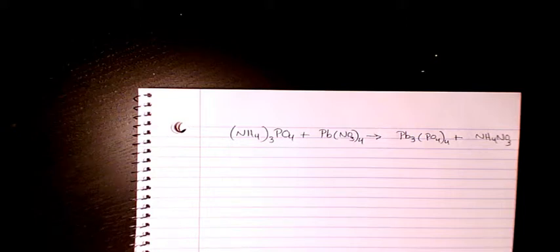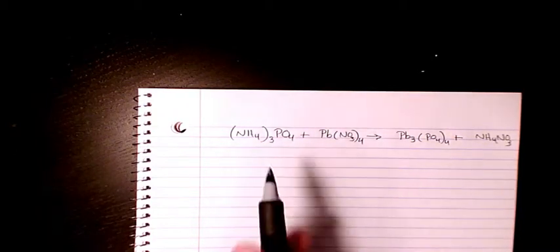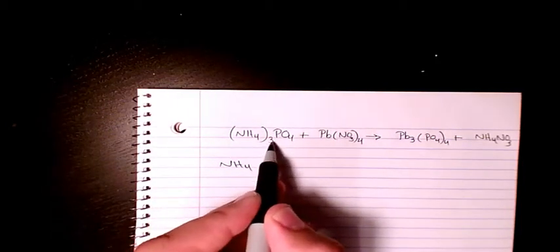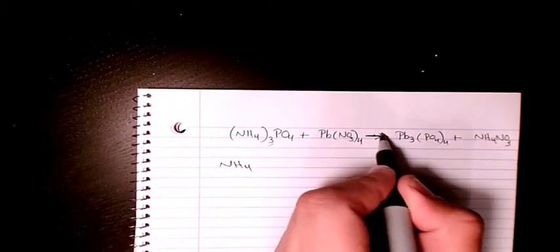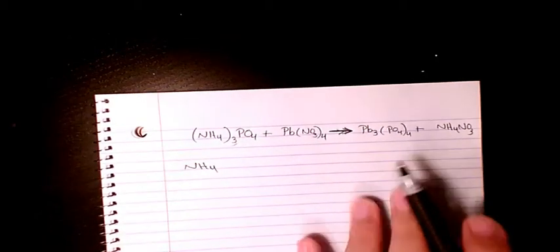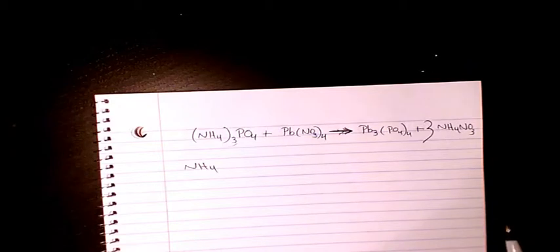What's up guys, welcome to my channel. This is Massey and here I want to show you how to balance this chemical equation. I start with ammonium. Ammonium ion here, we have three of them on the reactant side and in the product side we have just one. So we need to put three here so that ammonium is balanced.